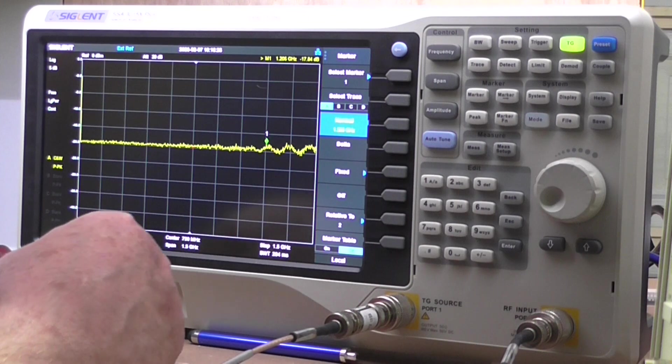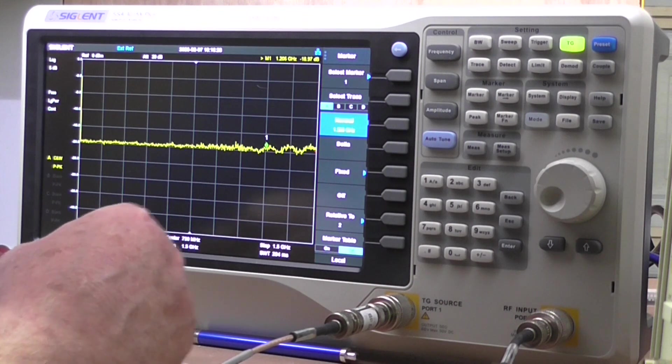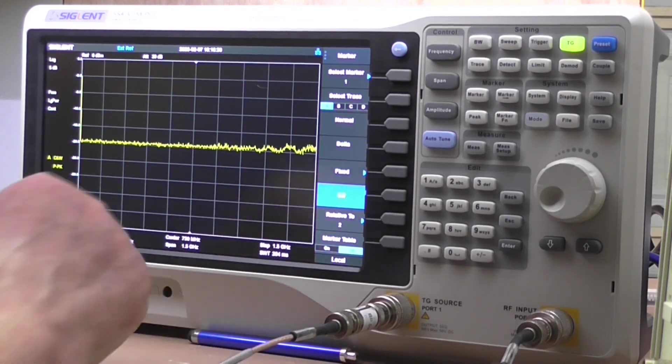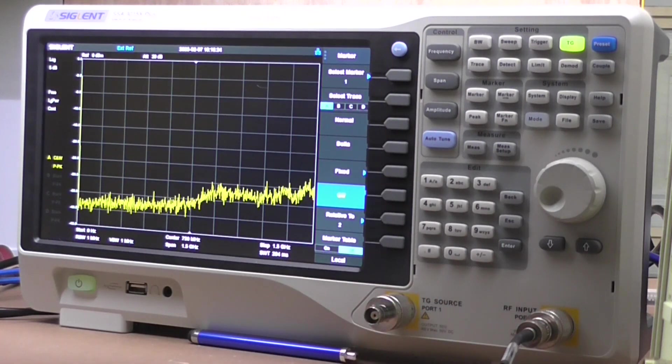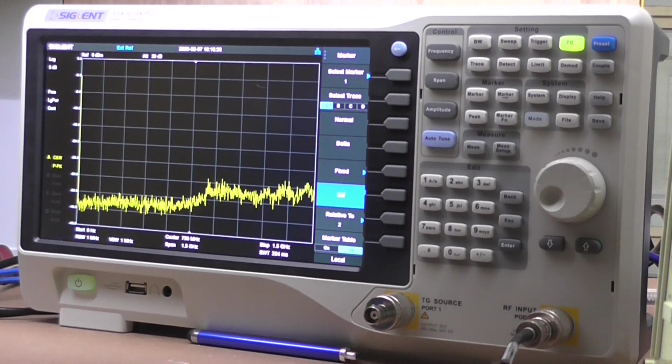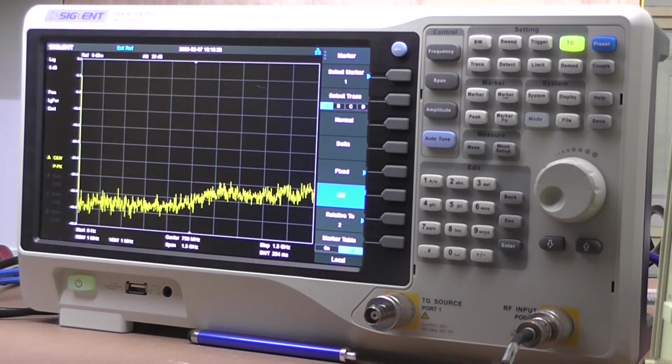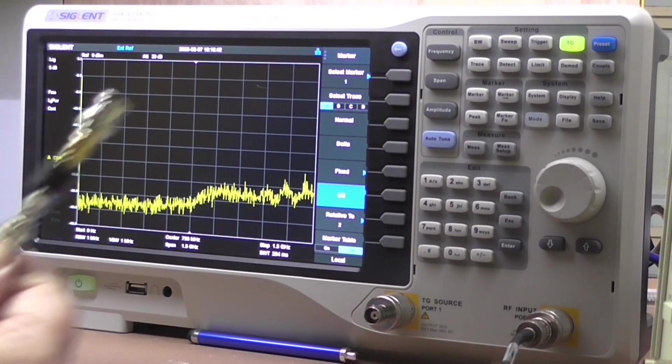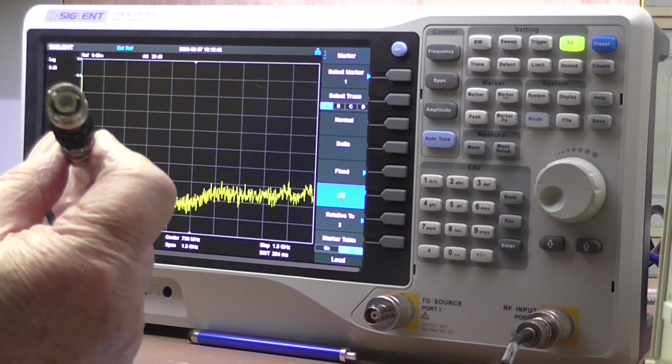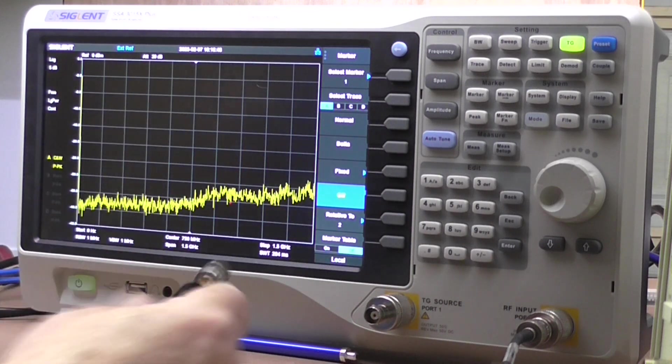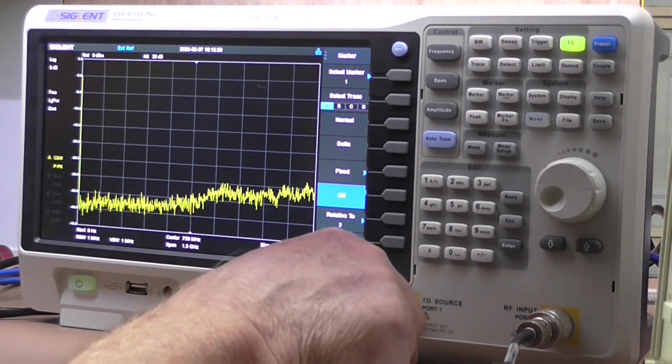So from about 1.2 gig onwards, not looking the best that ever was, but up to there we've got a pretty good 20 dB attenuator. The next one is SMA, not BNC, and it's rated for 5 watts. So you'll notice it's got a bit of a heatsink on it. The other ones, by the way, were only rated for 2 watts.